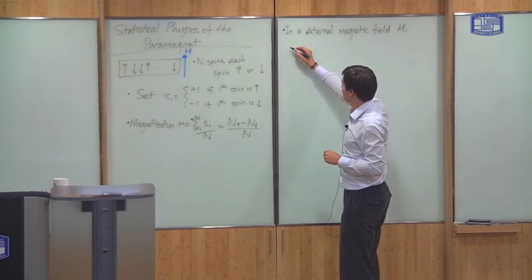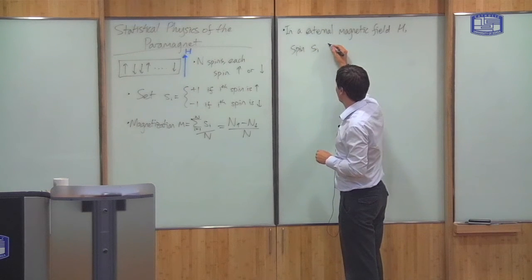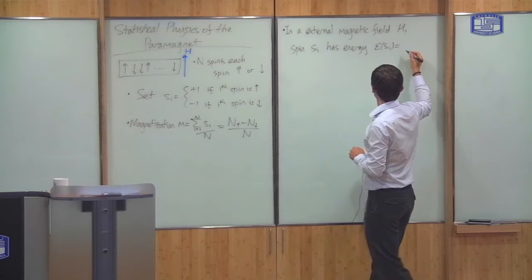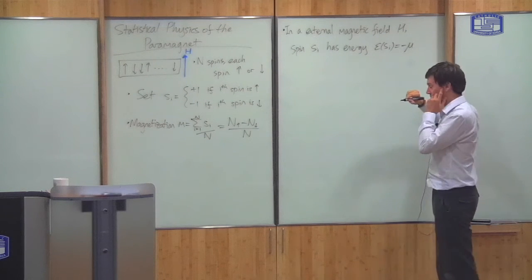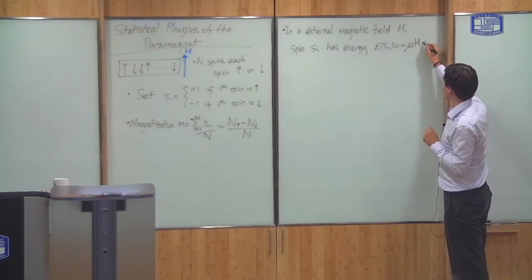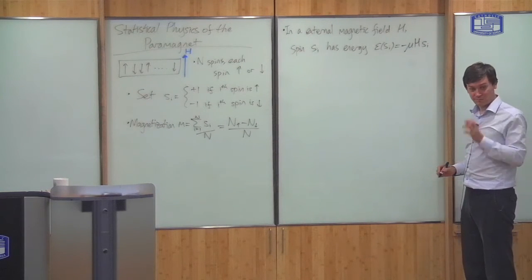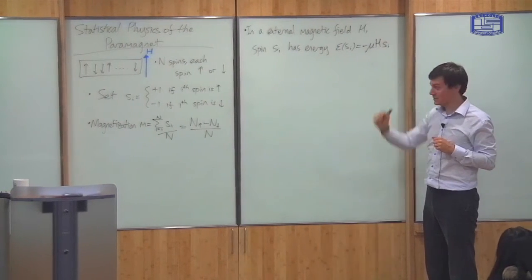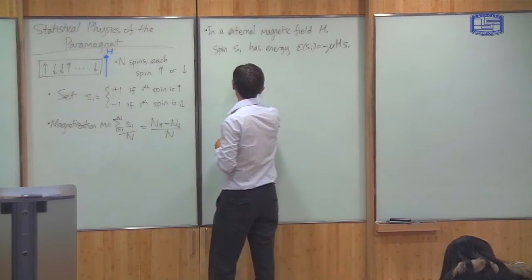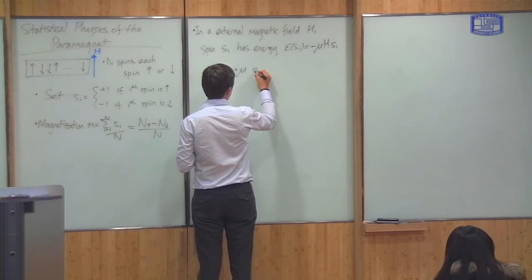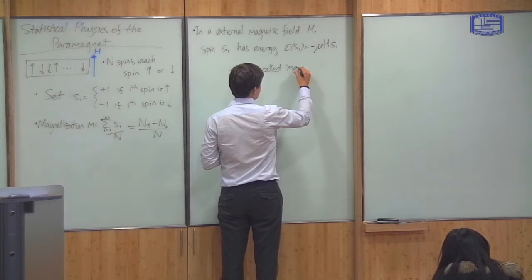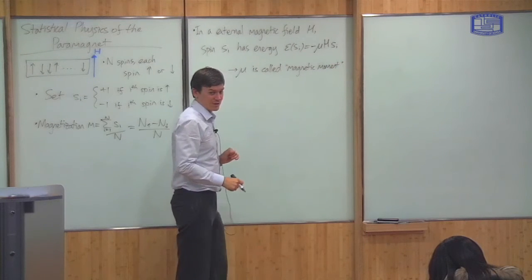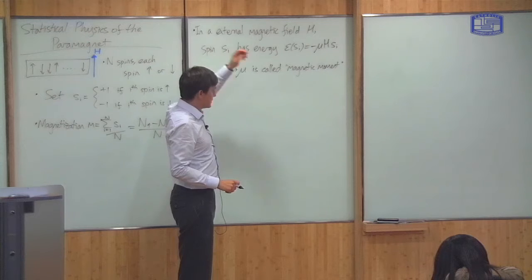In an external magnetic field H — H is the symbol usually given to external magnetic fields; B is the combined field — the spin has different energy. In particular, spin S_i has energy ε_i equals minus μ times H times S_i, where μ is called the magnetic moment. You can see that if S_i is plus one it has a lower energy, and if S_i is minus one it has a higher energy. The magnetic moment μ relates how the energy depends upon the magnetic field.